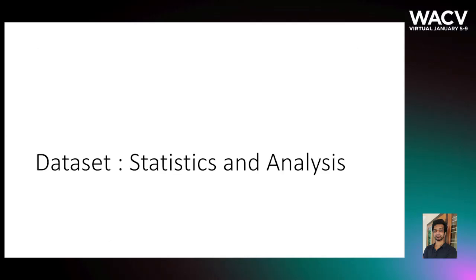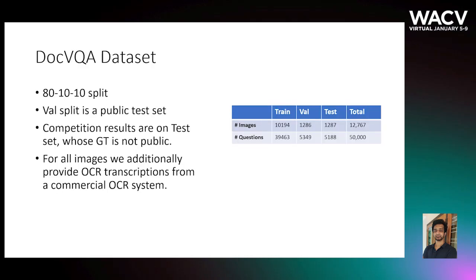In the next few slides, a brief summary of our dataset is presented. Our dataset has 50,000 questions defined over 12,000 plus document images. The data is split into train, validation, and test splits in an 80-10-10 ratio, and we use this test split for our challenge.